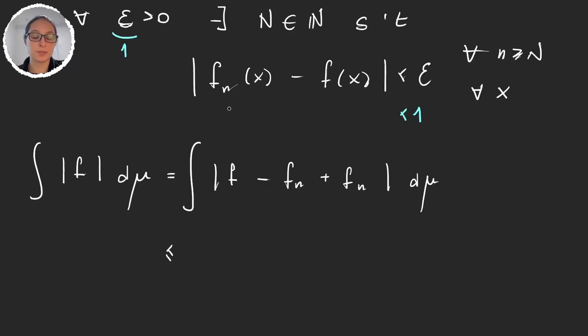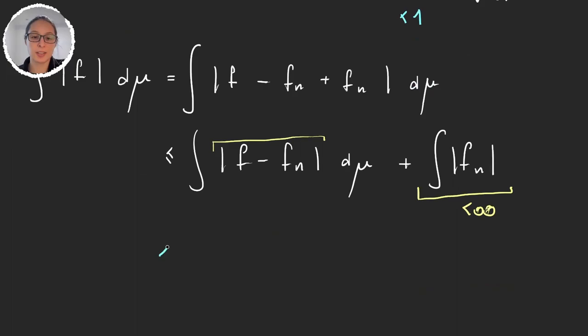This will give us the integral of |f - f_n| and then plus the integral of |f_n|. And here we have this term that is finite because f_n is in L1. So this gives us less than the integral of one plus this other integral that's finite, so we don't worry.